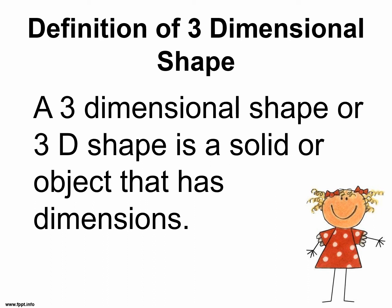Definition of three-dimensional shape. A three-dimensional shape, or 3D shape, is a solid or object that has dimensions.